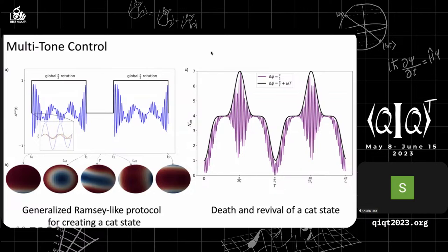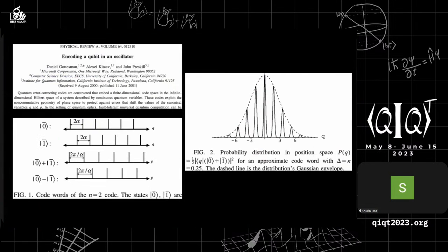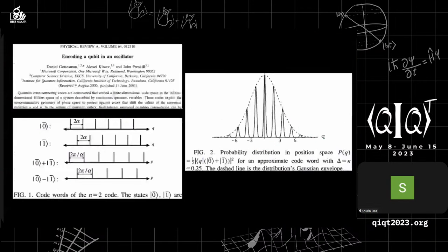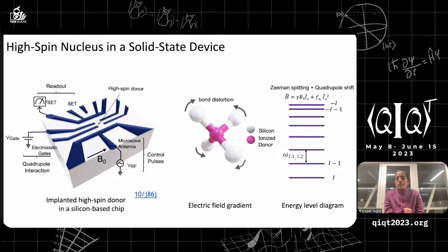Another question references experiments by Charlie Marcus and colleagues: they had quantum dot qubits using electrons, where nuclear spins were a nuisance causing dephasing — so they polarized the nuclear spins first. Here the approach is reversed: the nucleus is the main player. Are the electrons a nuisance that need to be dealt with?